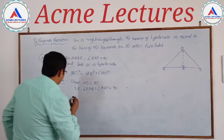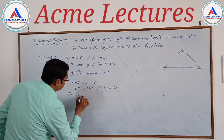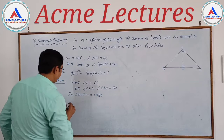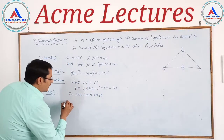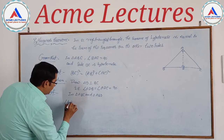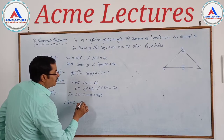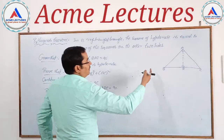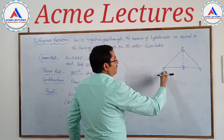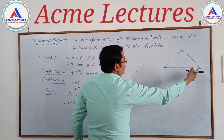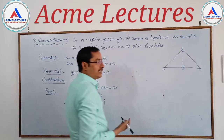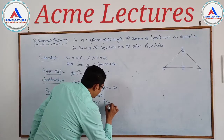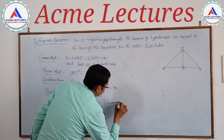Now, taking triangle ABC and triangle ABD. First condition: angle BAC equals angle ADB equals 90 degrees. This is because angle ADB is 90 degrees by construction, and angle BAC in triangle ABC is also 90 degrees — given. So both angles are 90 degrees, BAC equal to ADC, by given and by construction.